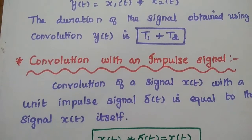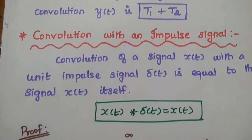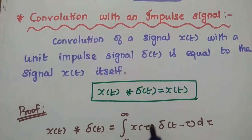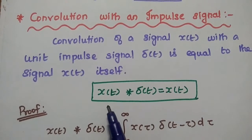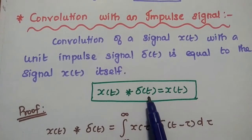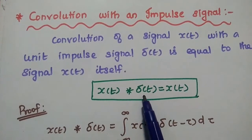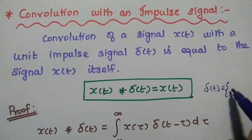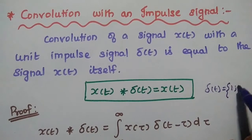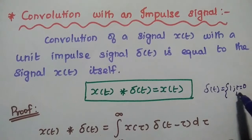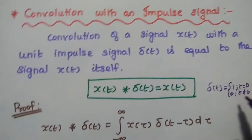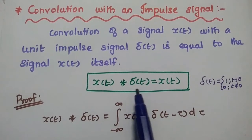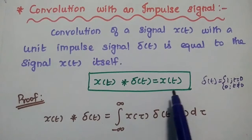The next property is convolution with an impulse signal. Convolution of any signal with a unit impulse signal is equal to the signal itself. That is given as X of t convolved with δ of t equals X of t. The impulse signal δ of t has value 1 only at time t equal to 0, and its value becomes 0 when time t is not equal to 0.